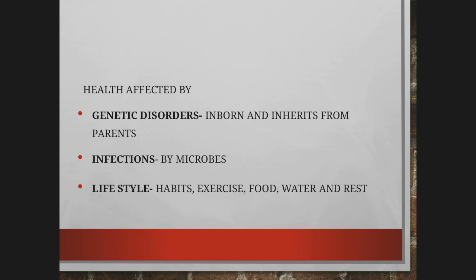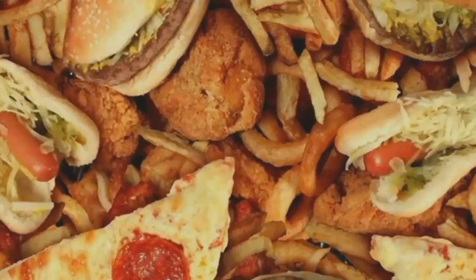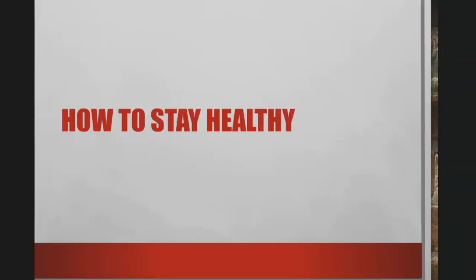The third threat is ultimately caused by ourselves — it is called our lifestyle, including habits, exercise, food, water, and rest. Regular alcohol consumption can lead to liver cirrhosis and in severe cases can cause death. For a chain smoker, it is easy to get lung cancer and emphysema, which causes difficulty in breathing. Similarly, try to avoid the consumption of junk food, as it has more sugar and cholesterol, which can damage our body.